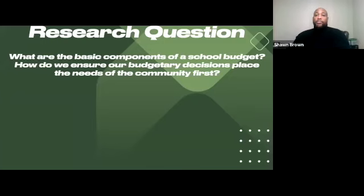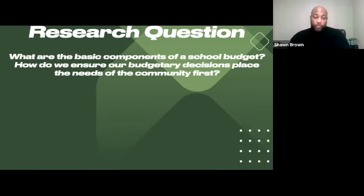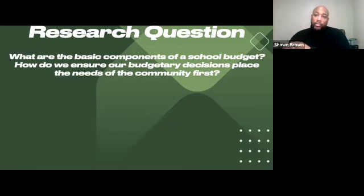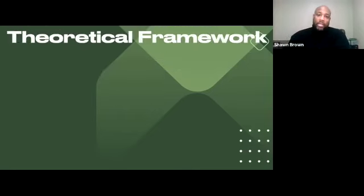The research question that we're going to be able to answer at the end of this class is: what are the basic components of a school budget, and how do we ensure our budgetary decisions place the needs of the community first? We have to know the basics of the budget, and then we want to make sure we're using school data — doing a deep analysis of how our school is performing — and making budgetary decisions based on the needs of our students. We remove subjectivity, emotions, and feelings, and look at what the data is saying.